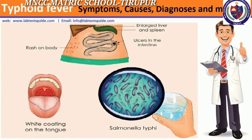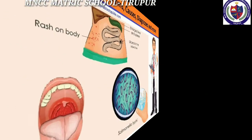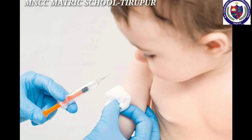Third disease is typhoid. Typhoid is caused by Salmonella typhi and spreads by contaminated food and water. The symptoms are anorexia, headache, rashes on abdomen, dysentery, and high fever up to 104 degrees Fahrenheit.